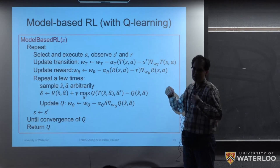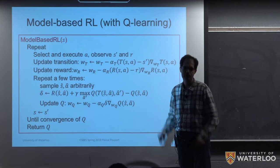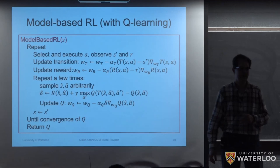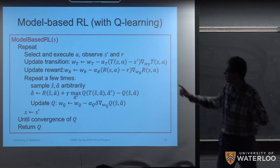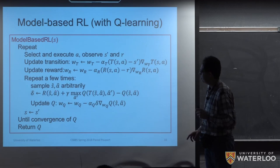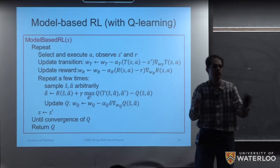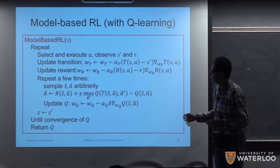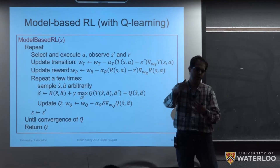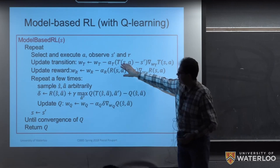A student asks if the learning rates are the same. Here I wrote α_T, α_R, and α_Q to allow different learning rates, though they could be made the same. As previously discussed, learning rates should have some decreasing schedule, and these parameters allow them to be adjusted differently.